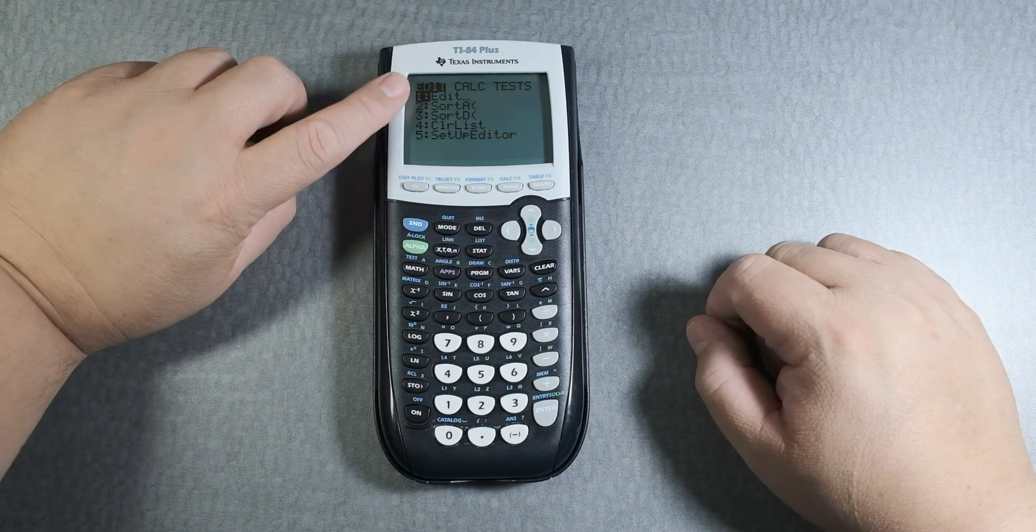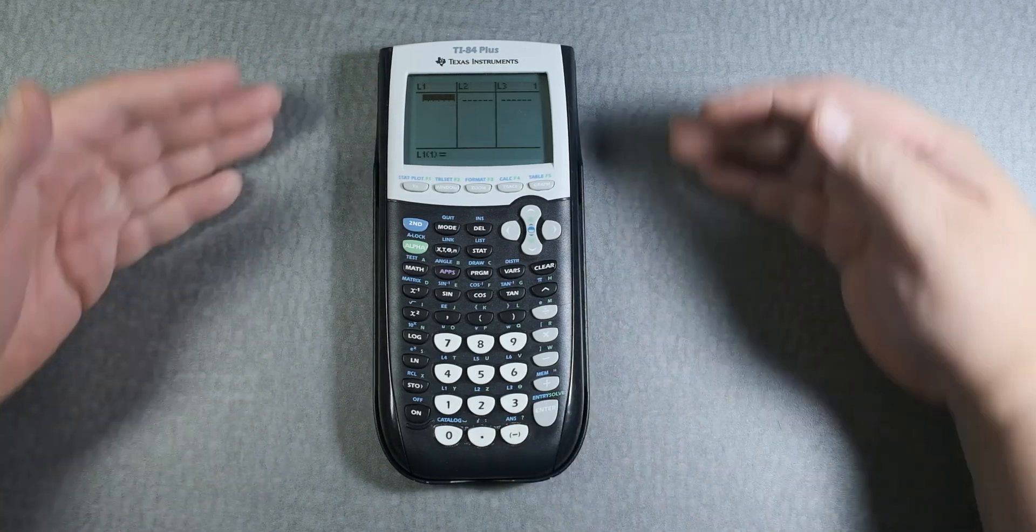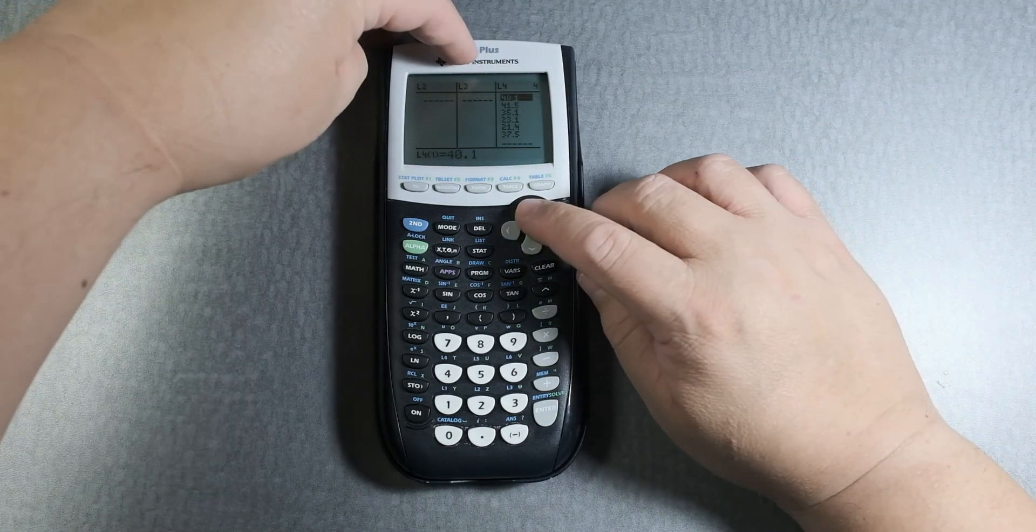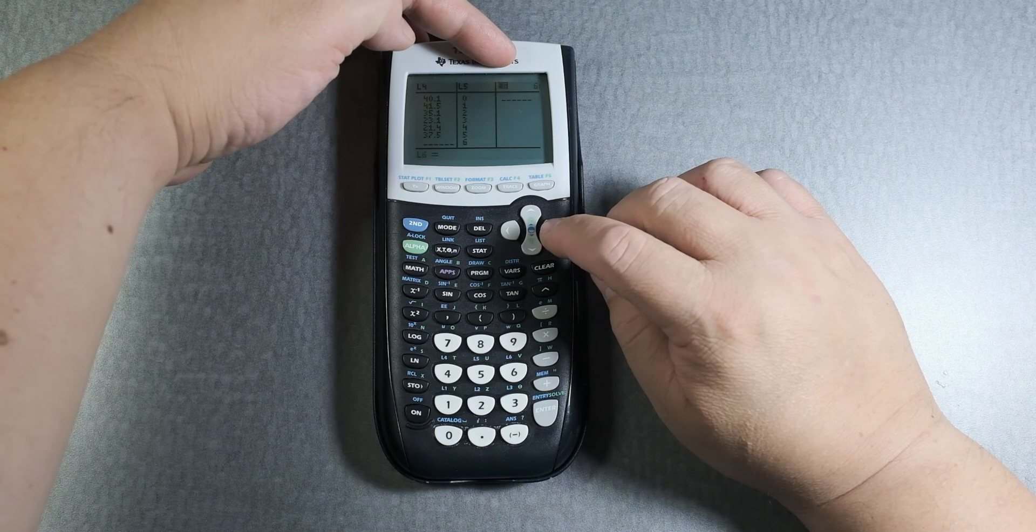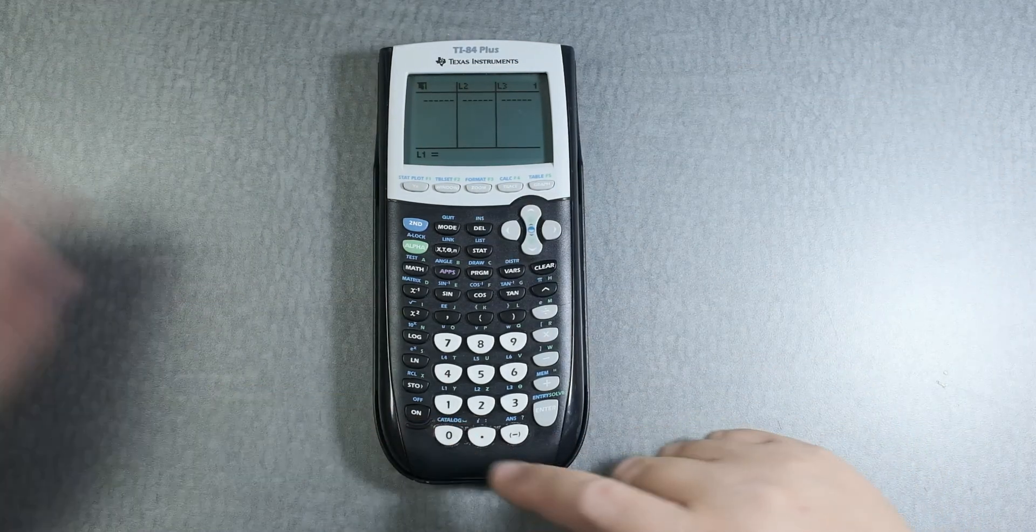Click number one or enter, and it gives you the list. There are six lists. If you move up, you'll see all six of them, or you can think of them as columns. You can also see them here: L1, L2, L3, and so forth.